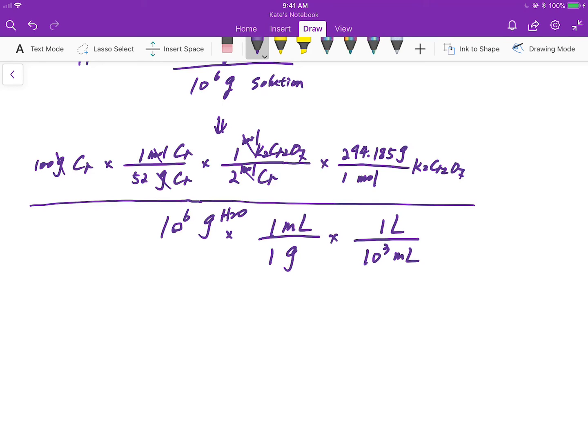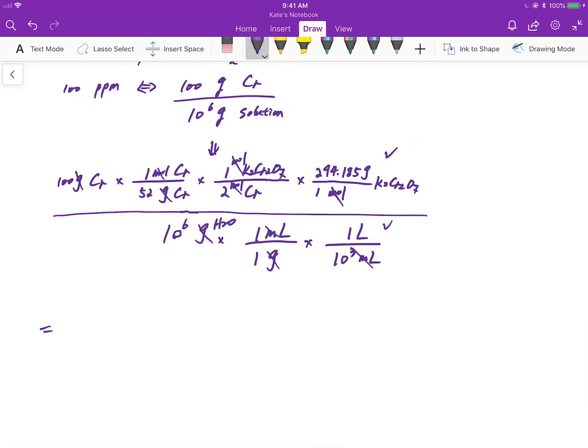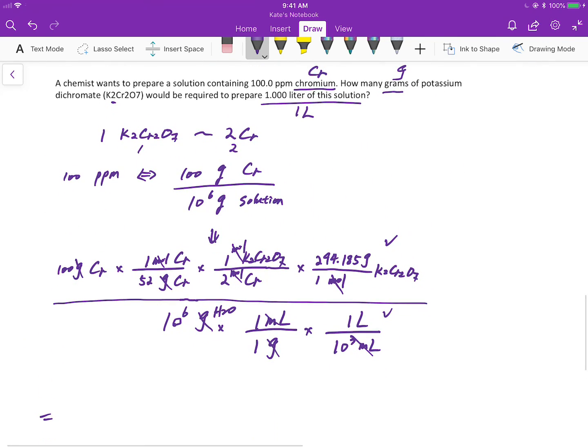Then in the numerator we have grams of potassium dichromate, and in the denominator we have liters of solution. And based on the problem statement, there are four significant figures: one, two, three, four.